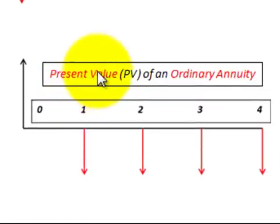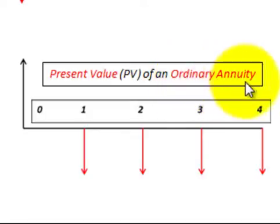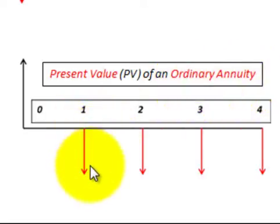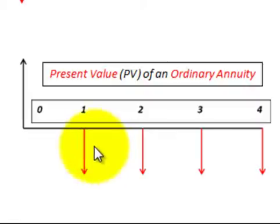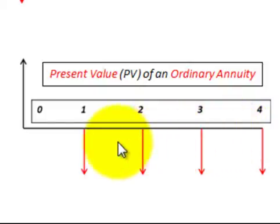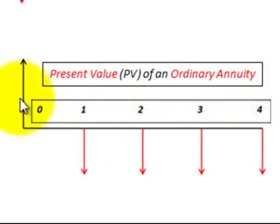Now let's look at the present value of an ordinary annuity. What we want to focus on is this ordinary annuity. What that means is we've got four equal payments and we receive them at the end of each year. The ordinary annuity means the end of each year or period, and we discount those equal payments back to determine their present value.